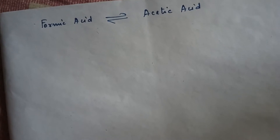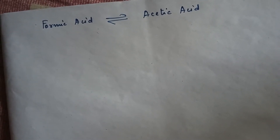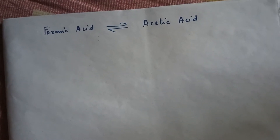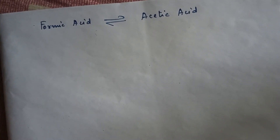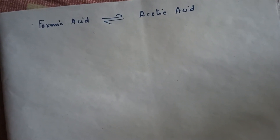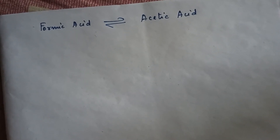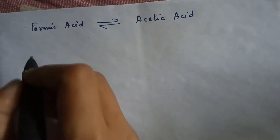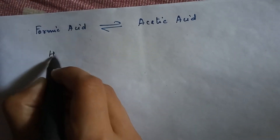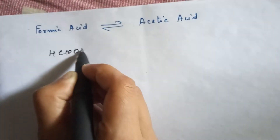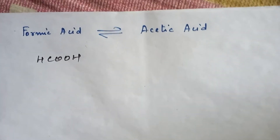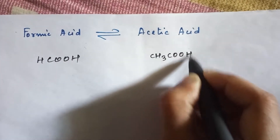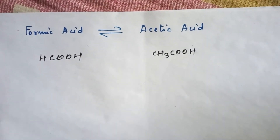We will cover the conversion from acetic acid to formic acid as well. I hope all of you know the formula of formic acid as well as acetic acid. Formic acid is HCOOH and acetic acid is CH3COOH.